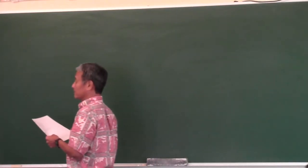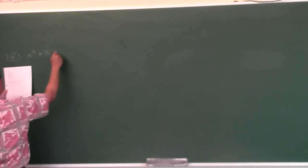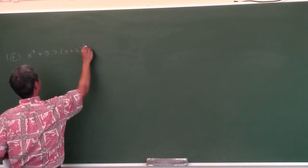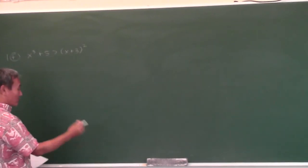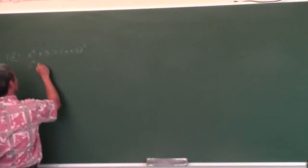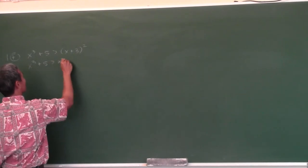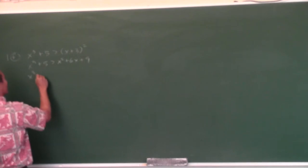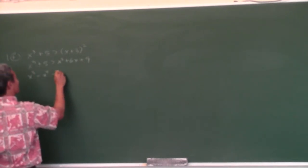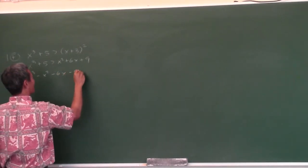So problem 1f: x cubed plus 5 is greater than (x plus 3) squared. The first thing you do is multiply out everything and make one side zero. So x cubed plus 5 is greater than x squared plus 6x plus 9. Bring everything over: x cubed minus x squared minus 6x minus 4 is greater than zero.